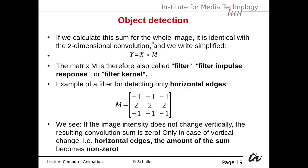If you calculate the sum for the whole image, it is identical to a two-dimensional convolution, written simplified as y equals x convolved with m. The matrix m is therefore also called a filter, a filter impulse response, or a filter kernel.